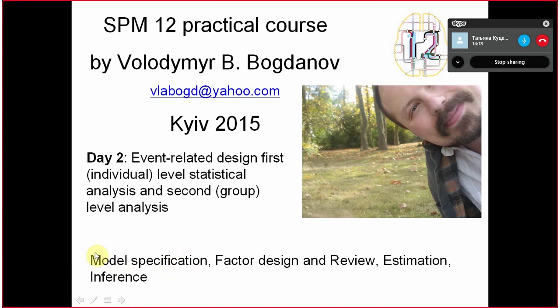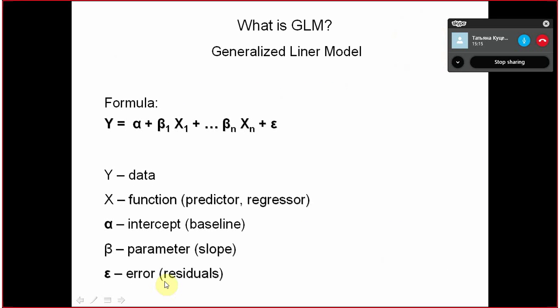After we go to model specification, a very important step where you set all the conditions, the factors, and we will discuss a little bit about different alternative ways to analyze the same set of data, which is simplest factor design. Then we see how to effectively review and estimate the statistical parameters and to see the inference in order to get beautiful images, at least at the first level.